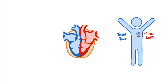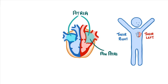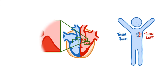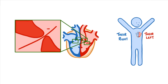You also need to know that the top chambers are called atria, with an individual one being called an atrium, and the bottom chambers are ventricles. Between the chambers and the vessels we find valves, which prevent the blood from flowing backwards, ensuring that it always flows in the right direction.